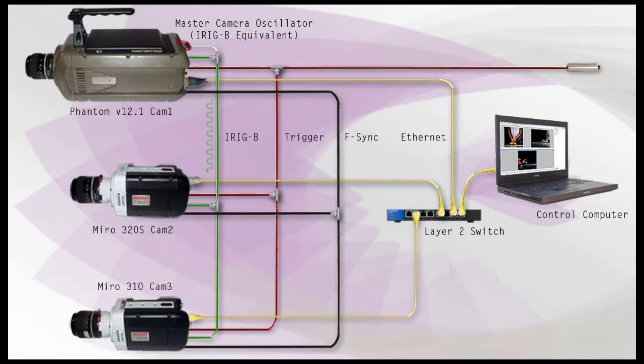So let's talk about ways to synchronize cameras using a single clock source. One way is to use one of the cameras' internal oscillators to generate an iRig-B — inner range instrumentation group time code B standard — equivalent pulse, to frame clock up to three additional cameras.